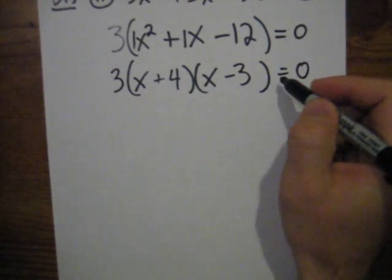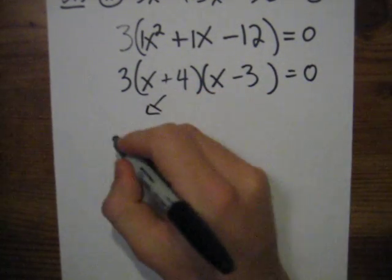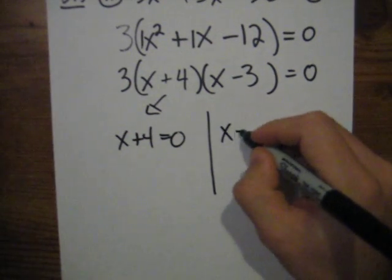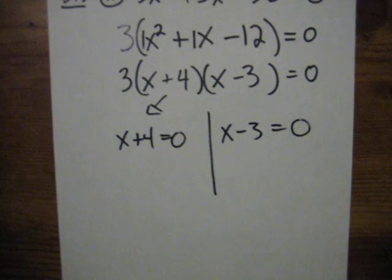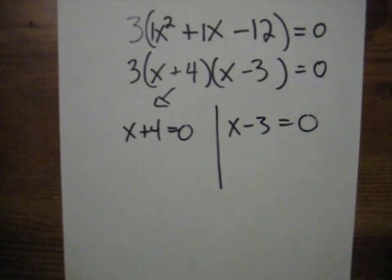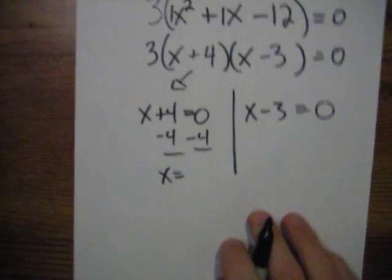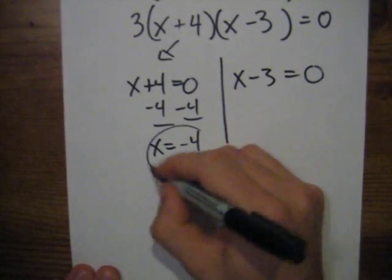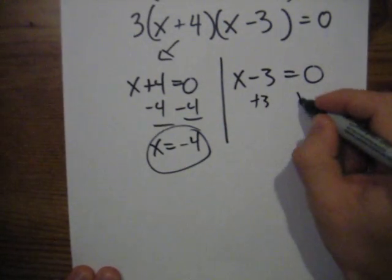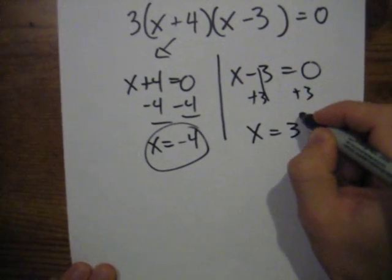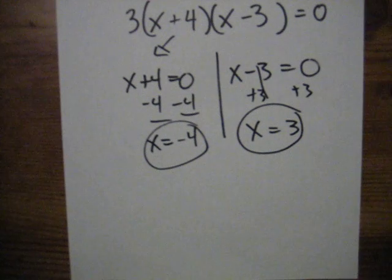I don't have to worry about the 3 because that can't ever be 0. It's just the factors that have an x in it. Set x plus 4 to 0 and x minus 3 to 0. And then I can solve those linear equations and I get my solutions. Minus 4, minus 4, x equals negative 4. Plus 3, plus 3, x equals 3. And there's my solutions.